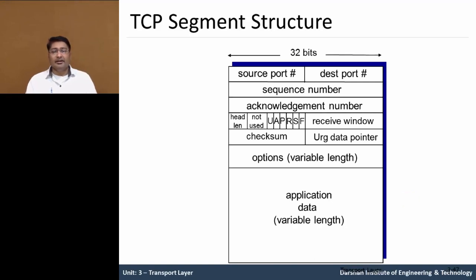In a TCP segment, it has a 32-bit, means 4-byte long header. There is a 16-bit source port number and a 16-bit destination port number.